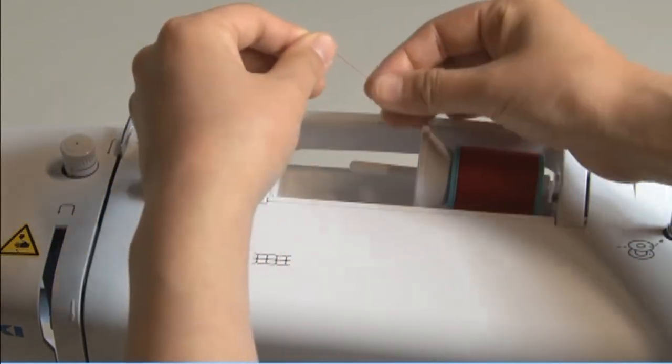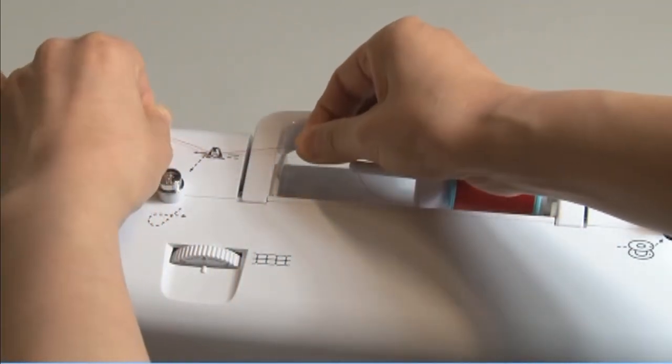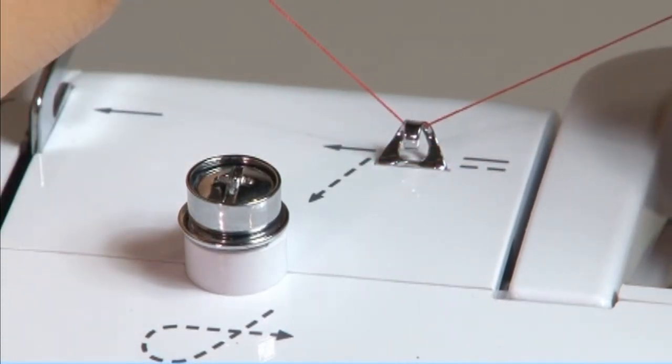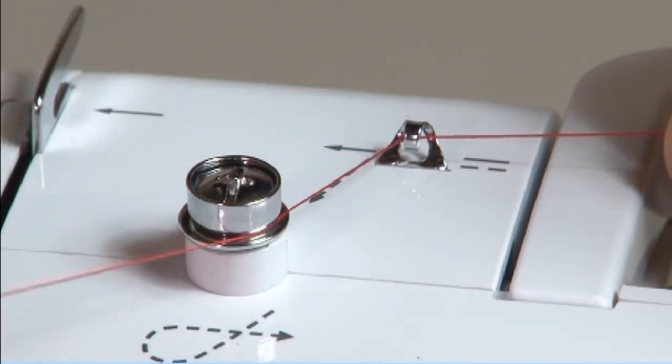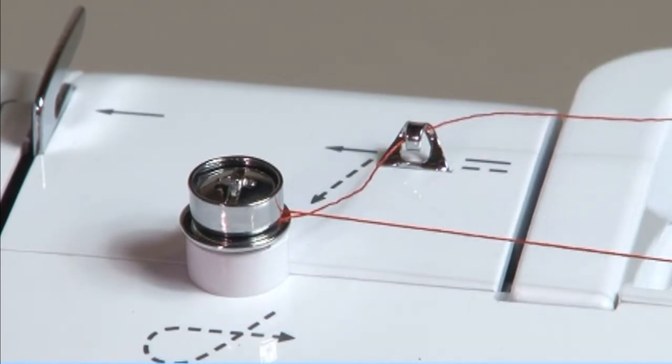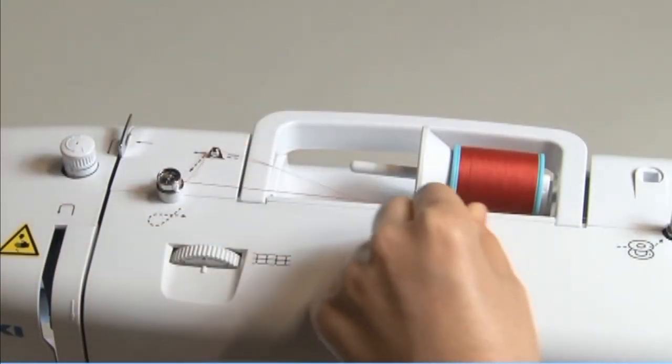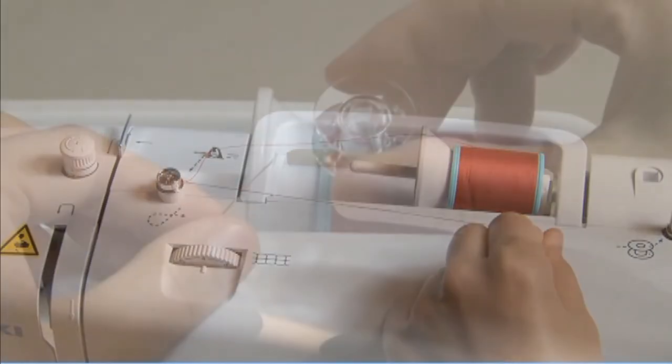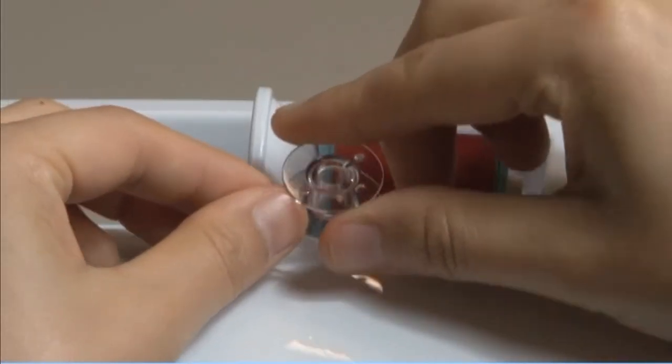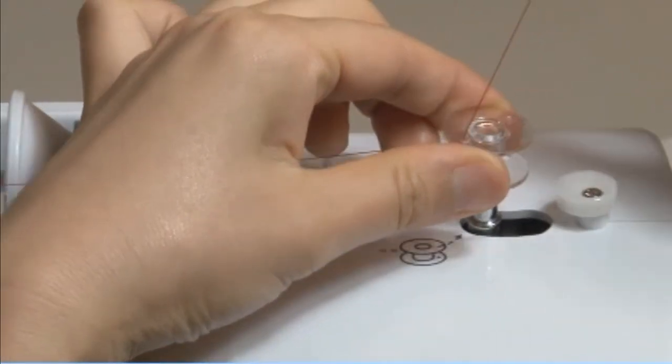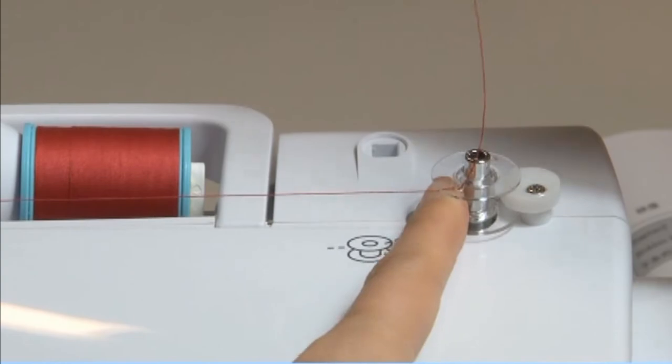Snap the thread into the thread guide. Wind the thread clockwise around the bobbin winder tension discs. Place the thread end through one of the inner holes in the bobbin and place the empty bobbin on the spindle.